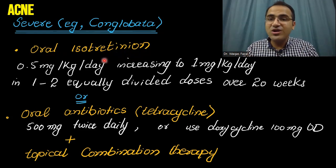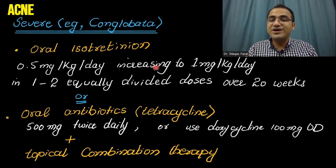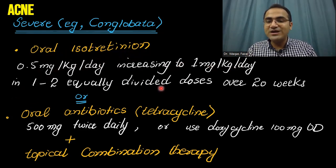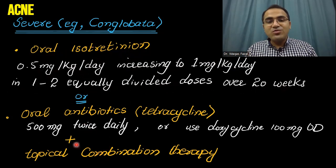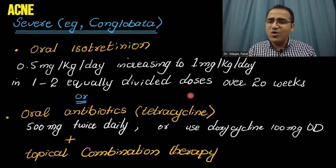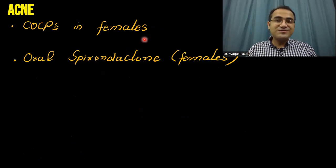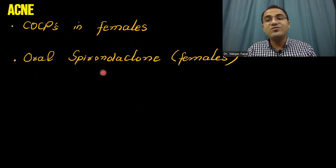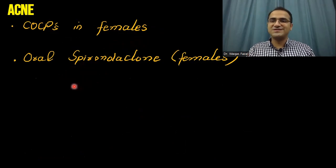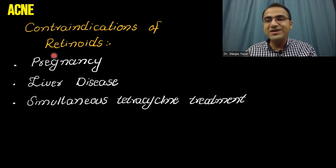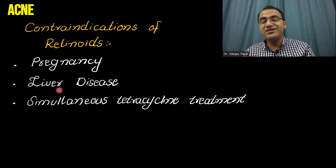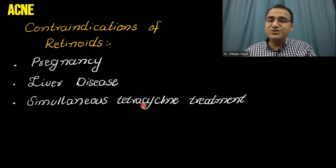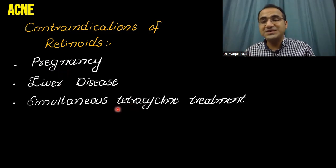In severe acne, oral isotretinoin is used at 0.5 mg per kg per day, increasing to 1 mg per kg per day, in one to two equally divided doses over 20 weeks. Combined oral contraceptives can be prescribed to females as they reduce androgens and cause resolution of acne. Oral spironolactone has also shown to reduce acne only in females. Remember, retinoids and oral isotretinoin cannot be given in pregnancy because they cause congenital malformations, and they cannot be given in liver disease. If the patient is taking oral isotretinoin, do not combine it with oral tetracycline treatment.